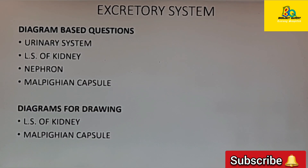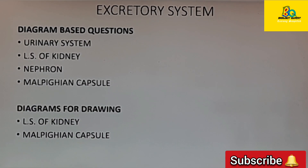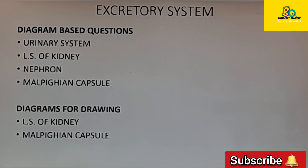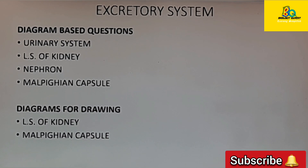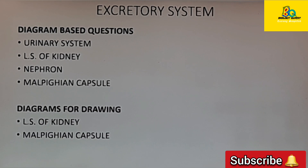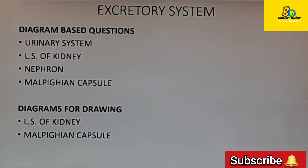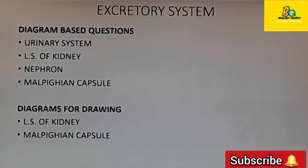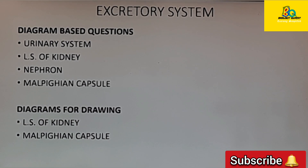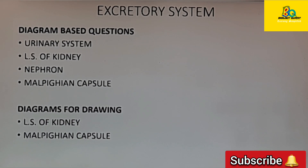Moving on to the next chapter, excretory system — the diagrams which can be asked as diagram-based questions are the urinary system, LS of kidney, structure of nephron, and Malpighian capsule. A diagram can be given and questions based on it may be asked. For drawing, you should study the LS of kidney and Malpighian capsule.